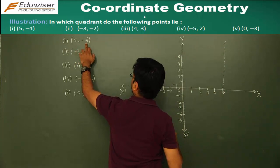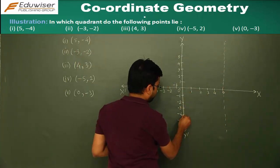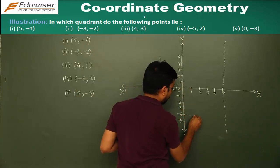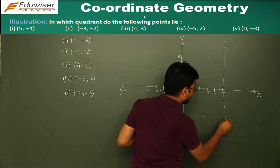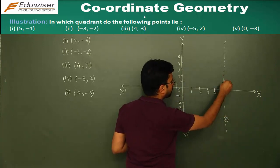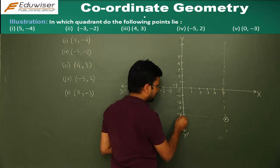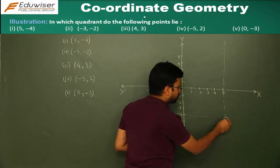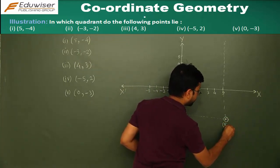The y-coordinate is minus 4, so you move negative along the y-axis to the minus 4 point. The point of intersection of these two lines — one parallel to the y-axis with x-coordinate 5, and the other parallel to the x-axis with y-coordinate minus 4 — gives you the point (5, minus 4).